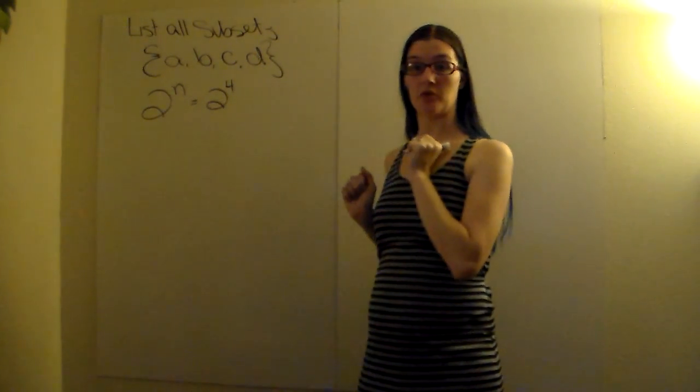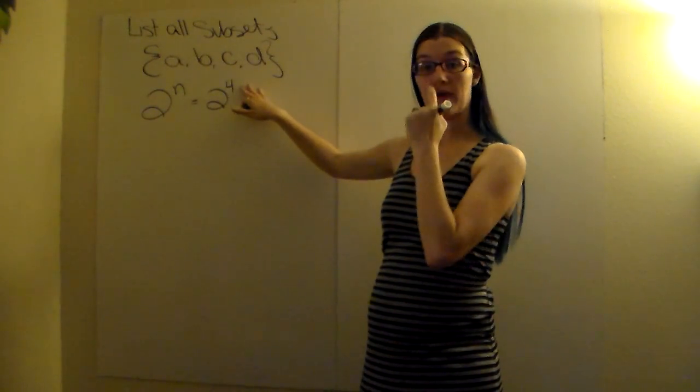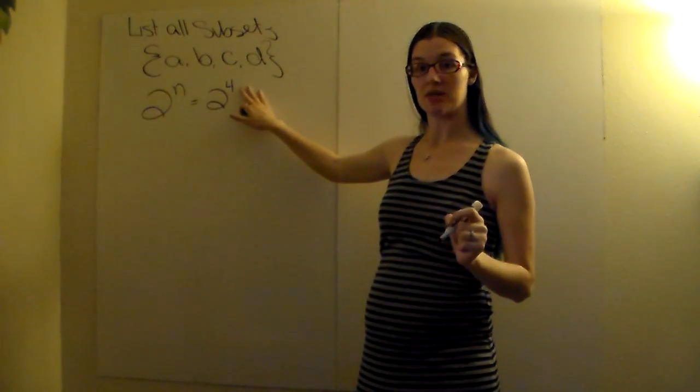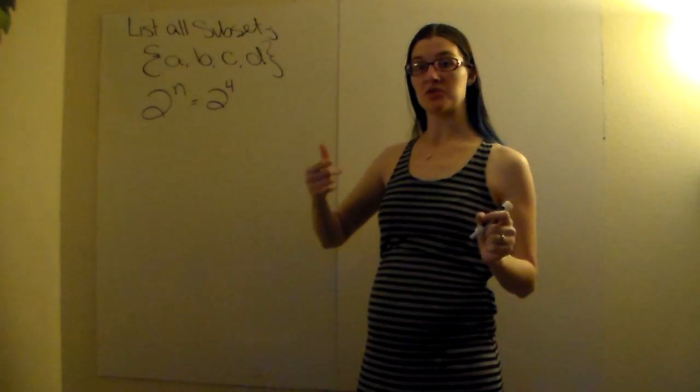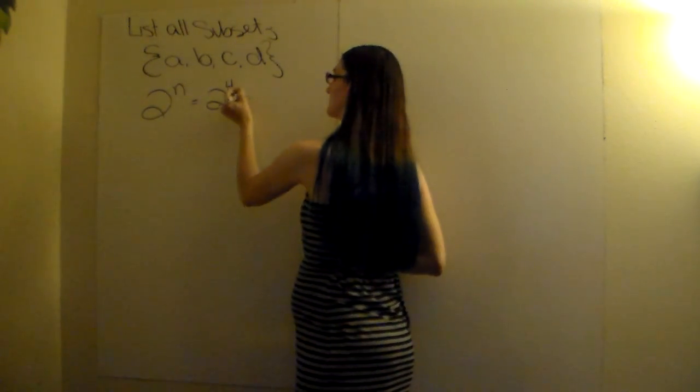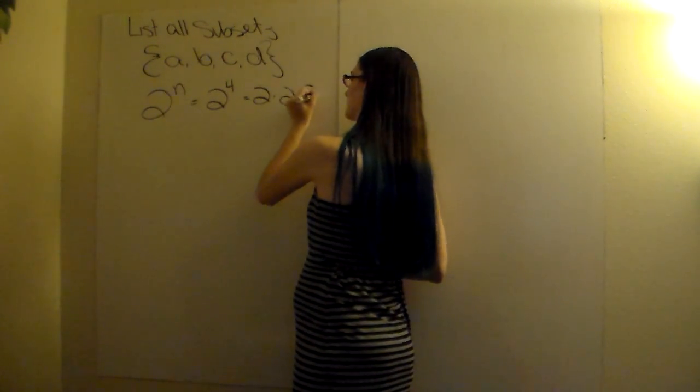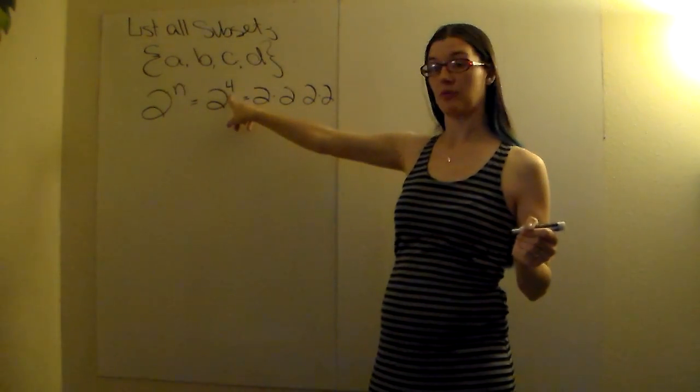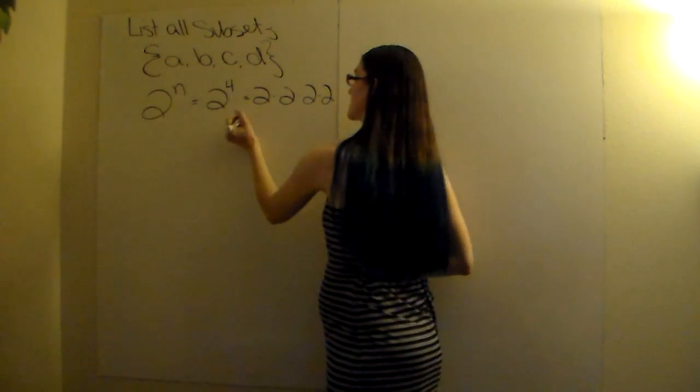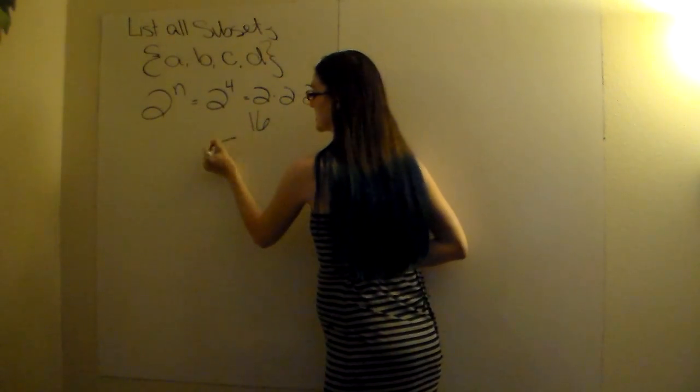So instead of n, you're going to put 4. Remember 2 to the 4th power is an exponent and do not do 2 times 4. It's 2 times 2 times 2 times 2. 2 times itself, 4 times. Which gives us 16 subsets.